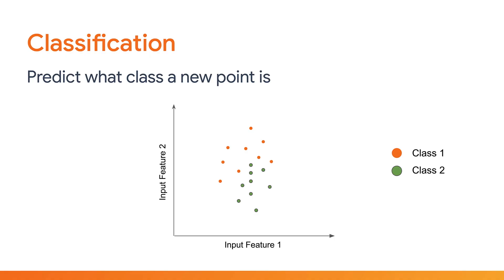In this section, you will learn about classification, which is all about predicting what class some input features represent instead. Let's start by visually reminding yourself of what classification is doing. Essentially, you have some data points with some features like the ones shown, and if you plotted them on a scatterplot, it might look something like this.